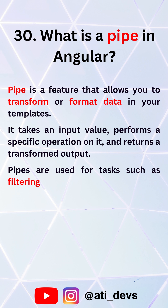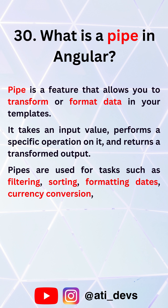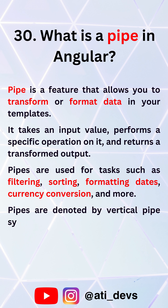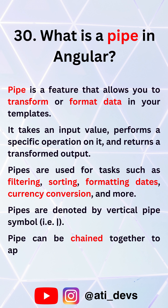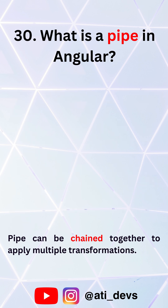Pipes are used for tasks such as filtering, sorting, formatting dates, currency conversion, and more. Pipes are denoted by the vertical pipe symbol. Pipes can be chained together to apply multiple transformations.